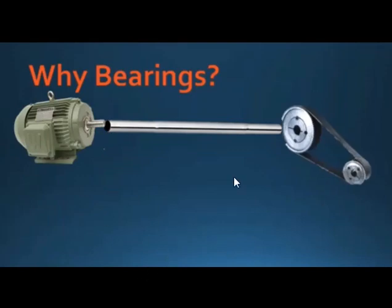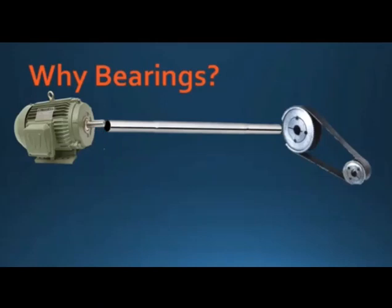On the other side we connect a belt drive, chain drive, or rope drive — whatever is required — to transfer power from the prime mover to a useful device via the shaft. We cannot couple the shaft directly to the machine. For rotating surfaces, direct coupling causes friction, wear and tear, unnecessary power loss, and heat generation. To avoid this, we use bearings, lubrication, or grease as required.